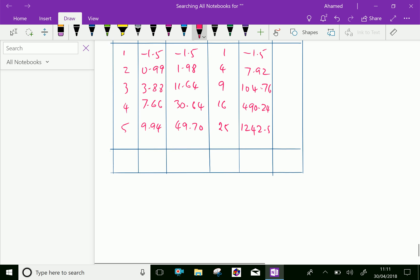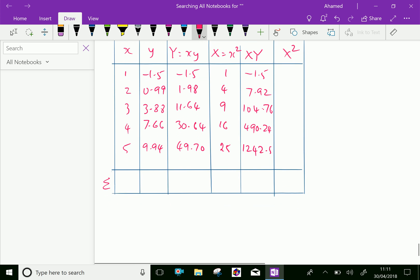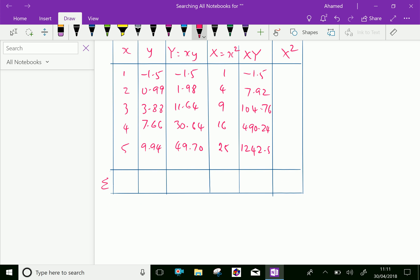The sigma values are: sigma Y equals 92.46, sigma X equals 55, sigma XY equals 1843.92, and sigma X² equals 979.